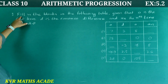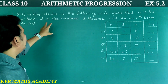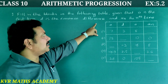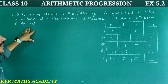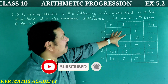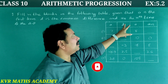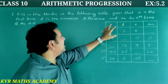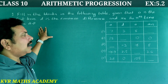This is the first question: Fill in the blanks in the following table, given that A is the first term, D is the common difference, and A-N is the nth term of the AP.